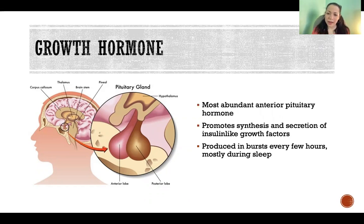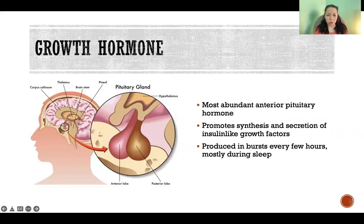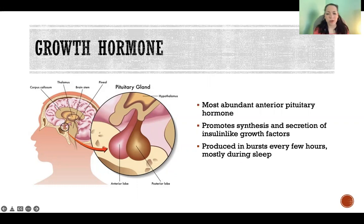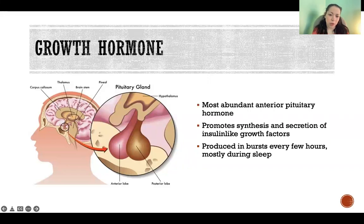Growth hormone is the most abundant anterior pituitary hormone. We have our little pituitary gland — the master endocrine gland hanging off of the hypothalamus at the front of the brain. It secretes lots of hormones, growth hormone being one of them. Growth hormone promotes synthesis and secretion of insulin-like growth factors. Growth hormone is produced in bursts every few hours and mostly during sleep — we especially secrete it during sleep, and we'll talk more about that.